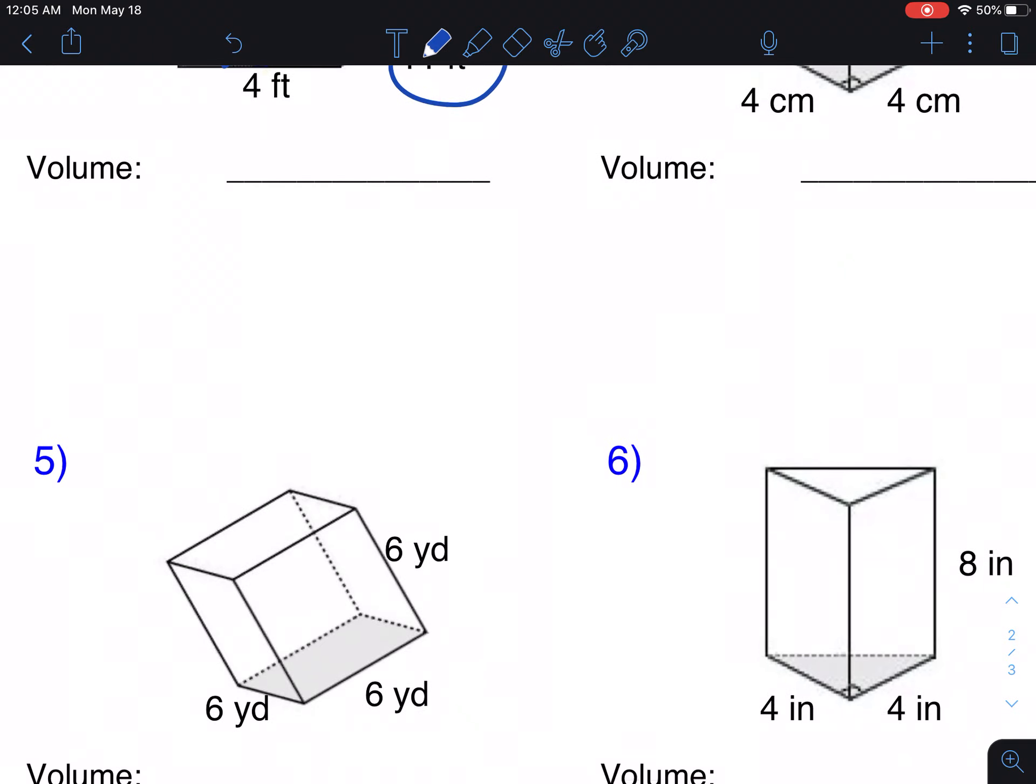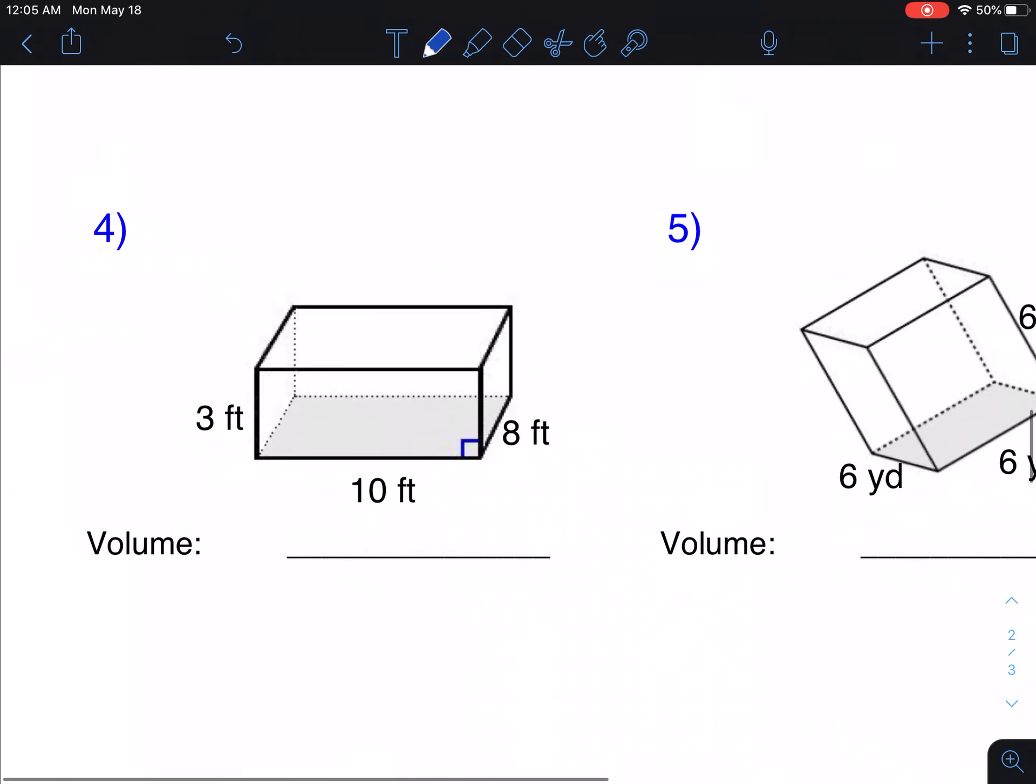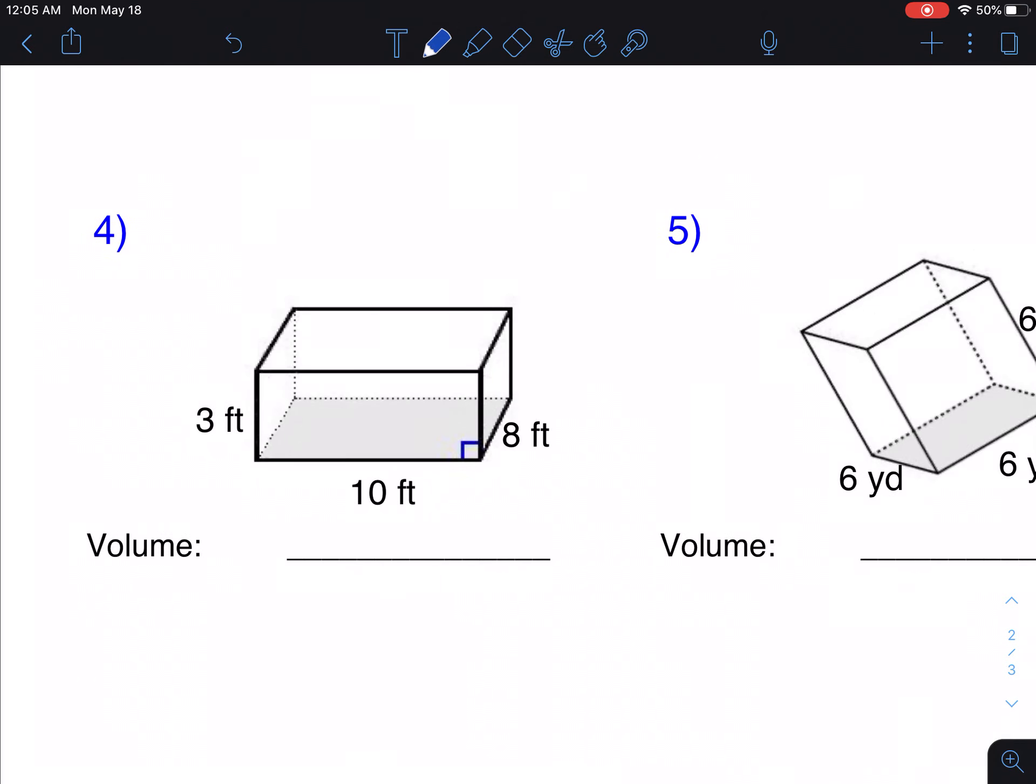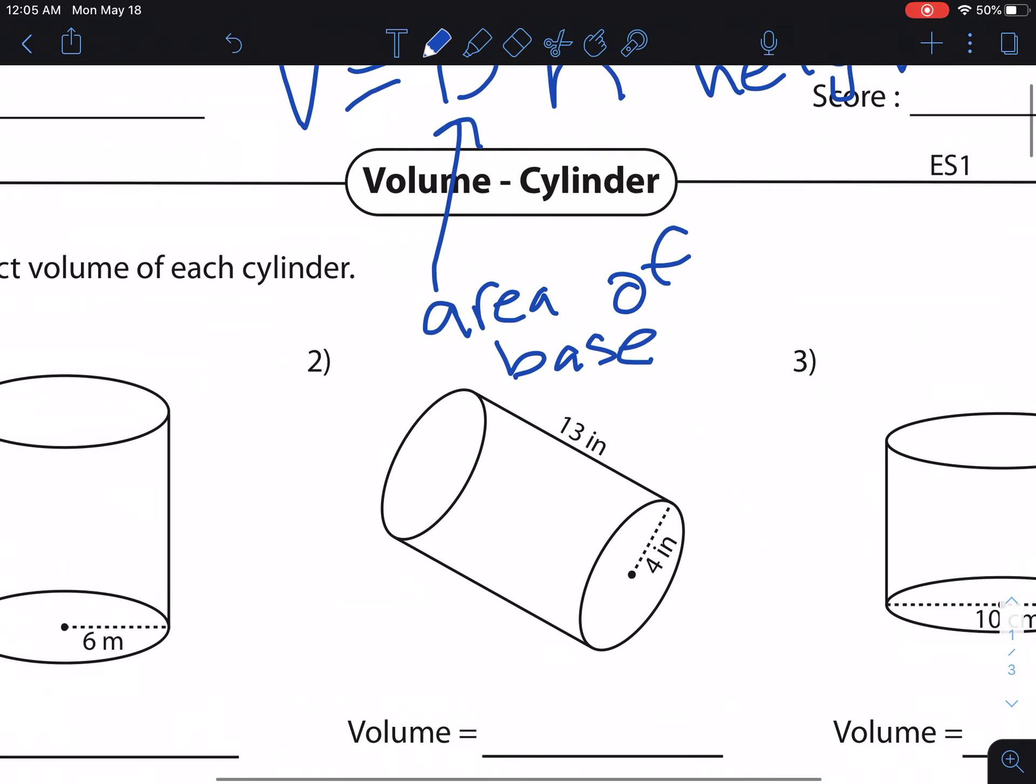And then for rectangles, rectangular prisms, so for a rectangular prism, the base shape would be one of the rectangles. It doesn't matter which one you pick. Say, that one, the 8 by 10 rectangle. And then there's the other 8 by 10 rectangle. So, basically, you'd find the area of this one times 3. 3 would be the height. The area of the base shape would be 80, but I'm kind of getting ahead of myself here. So, anyway, I just wanted to go over the formula is the area of the base shape times the height, or the area of the base shape times the distance to the next base shape.